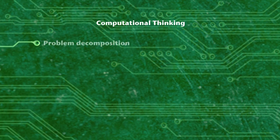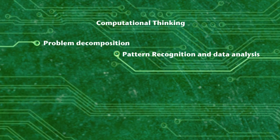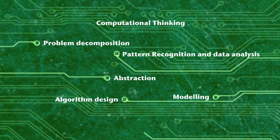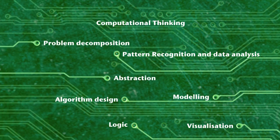But the most important feature of computer science teaching is computational thinking. This includes problem decomposition, which is breaking down complex things into smaller units. Pattern recognition and data analysis — trying to better understand what is happening. Abstraction, which is removing unnecessary detail from complex situations. Modelling — using the computer to represent real activities. Algorithm design, i.e. planning the sequence of actions. Logic, using boolean operators of AND, OR and NOT. And visualisation, which is developing the skills to both understand different diagrammatic forms and also create images to represent systems and processes.